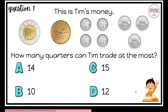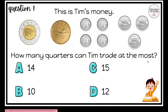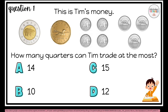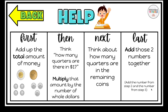So this is the first question. Question one: this is Tim's money — how many quarters can Tim trade at the most? If a student finds this tricky, they can go to the help button. This student here with the hand up is just a help button. Click it and it'll redirect you to a tips page that gives a little bit of guidance on how to go about answering the question without giving the exact answer.